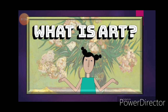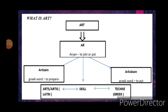Let us first learn the etymology of the word art. Art comes from AR or Arian, meaning to put or to join. Under that we have artisan, a Greek word meaning to prepare. Another is archisken — artisan means to put. Then we have art or artist from the Latin word meaning skill, and tekne from the Greek word which also means skill. So art means making or preparing something, joining something, or putting something into one using your skill.